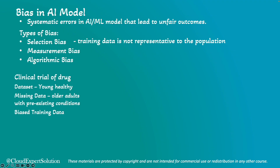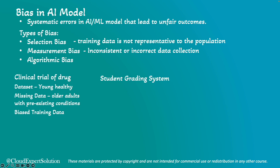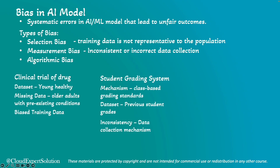Next, measurement bias arises when the data collected is inaccurate or inconsistent, leading to errors in the model's predictions. For example, if a school uses different grading standards for different classes, the data on student performance will be inconsistent. A model predicting student success based on these grades will be biased, as the grades do not accurately reflect student ability across classes.